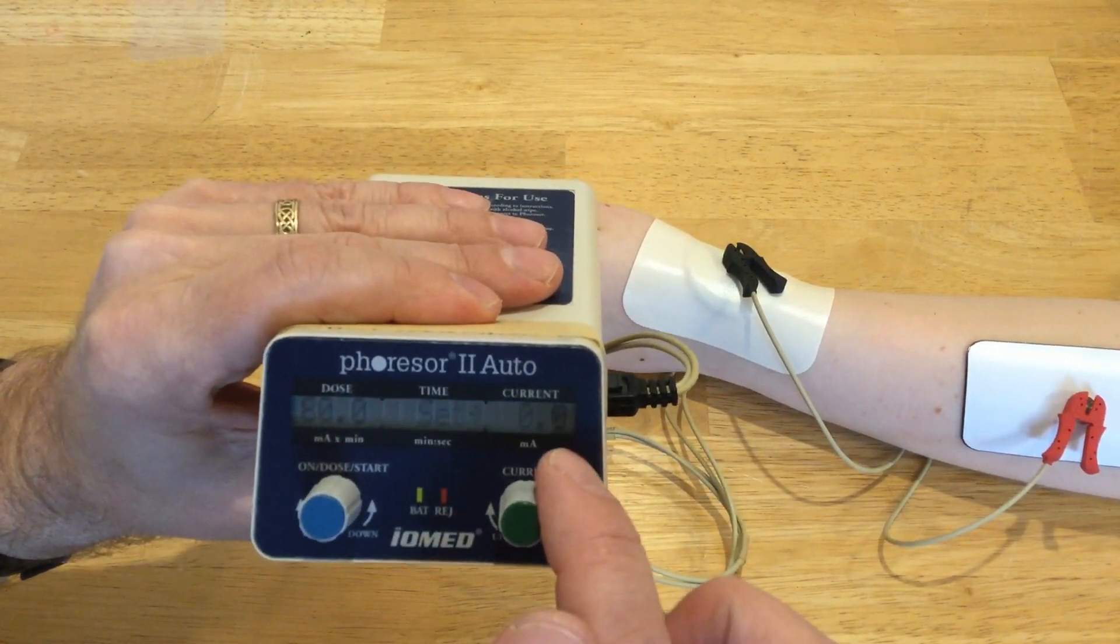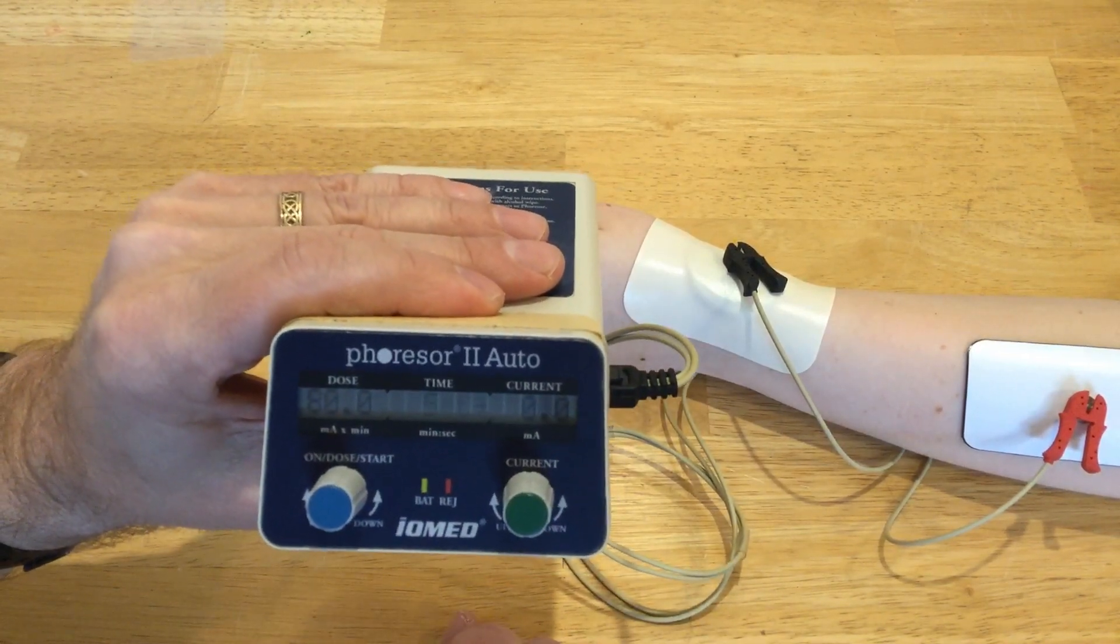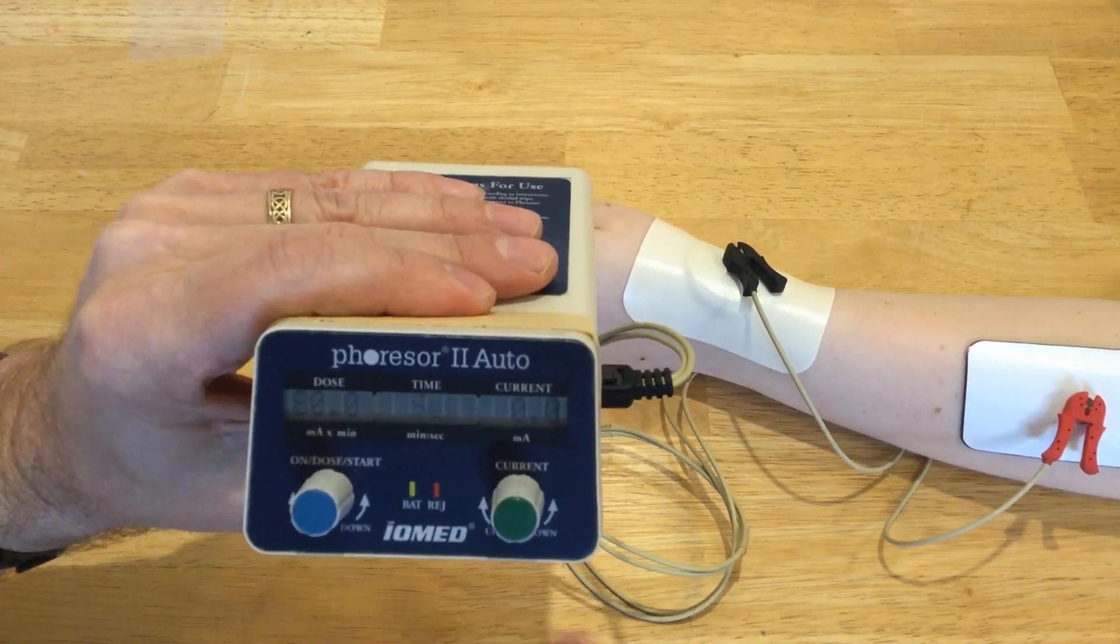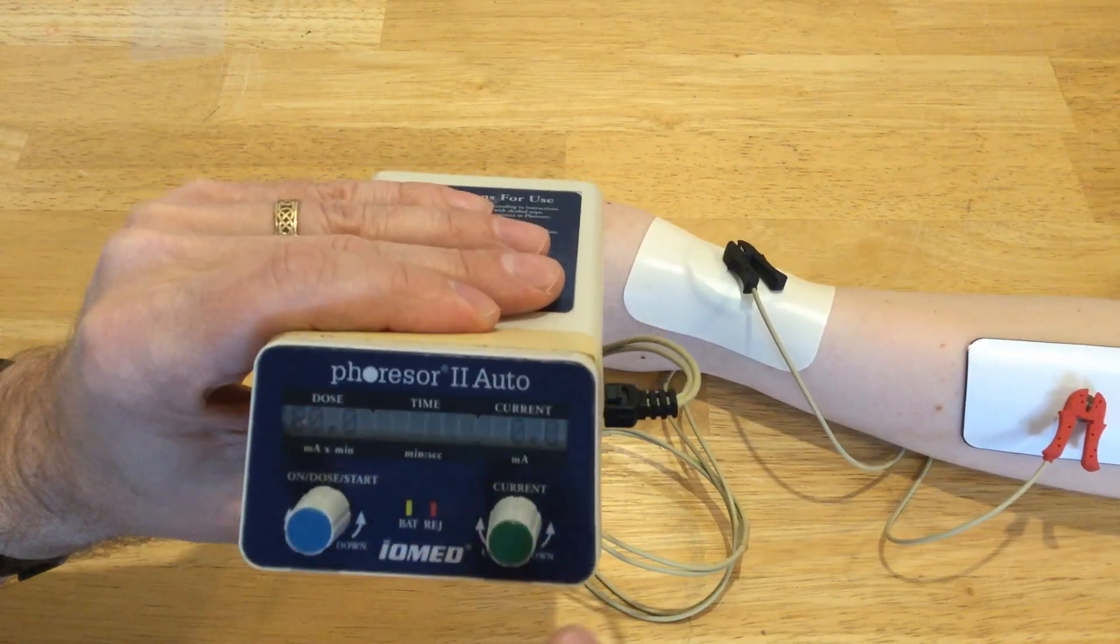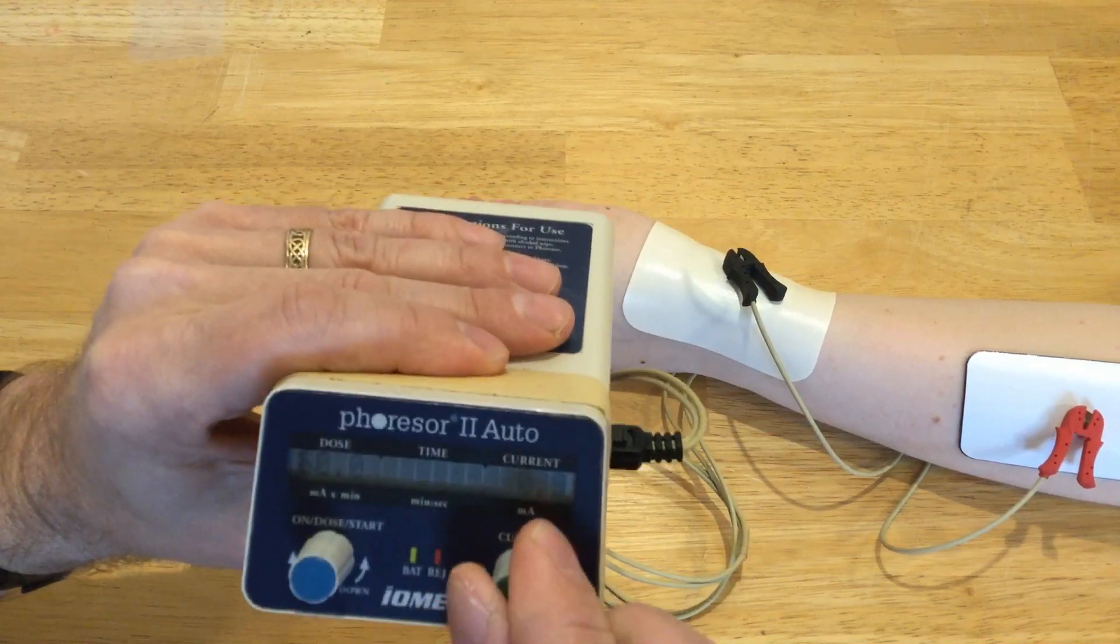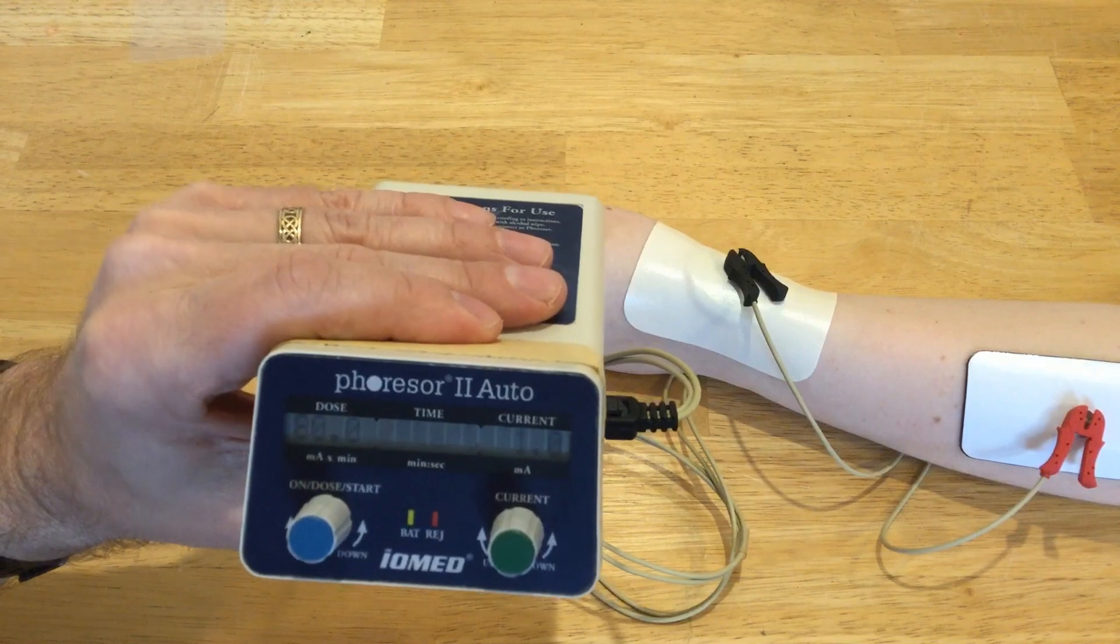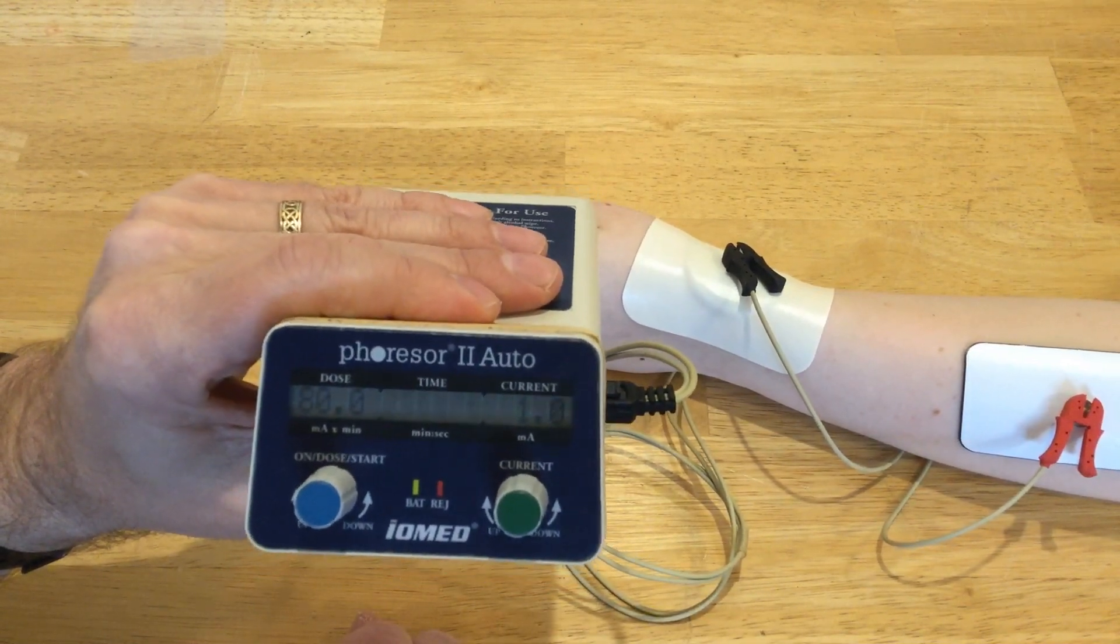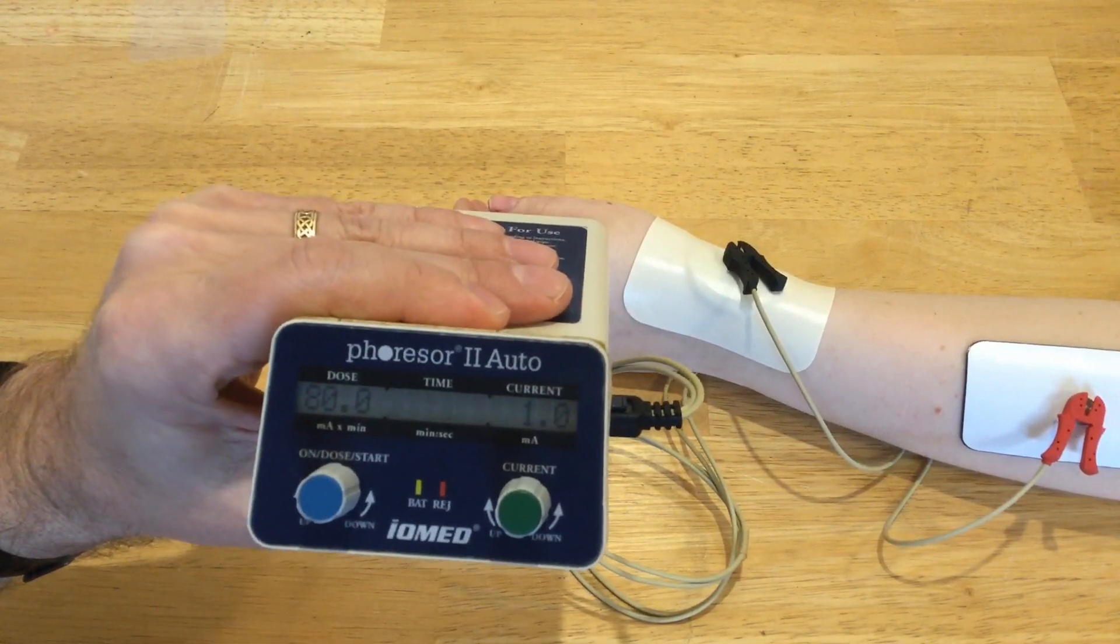Then it asks you to set the current - how high do you want the current in milliamps. This machine will adjust the voltage to maintain whatever current you set. To set the current, you turn this right knob. I usually start fairly low - I'm going to start at one milliamp. You can set it anywhere from zero to four milliamps. Once you have those set the way you want them, you turn this left knob clockwise again to start it.